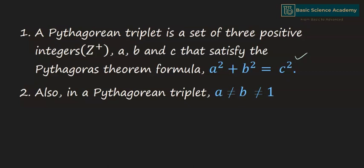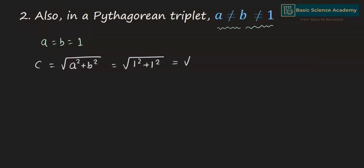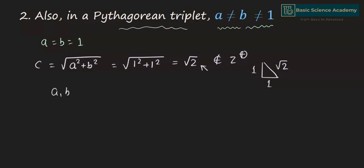Also, in a Pythagorean triplet, A and B are not equal to 1. When A equals 1 and B equals 1, C can be calculated as C = √(A² + B²) = √(1² + 1²) = √2. Since √2 is an irrational number, it doesn't belong to the set of positive integers. Hence we do not consider a right-angle triangle with sides A=1, B=1, C=√2 as a Pythagorean triplet. Therefore, in a Pythagorean triplet, A and B always belong to the set of positive integers minus 1.